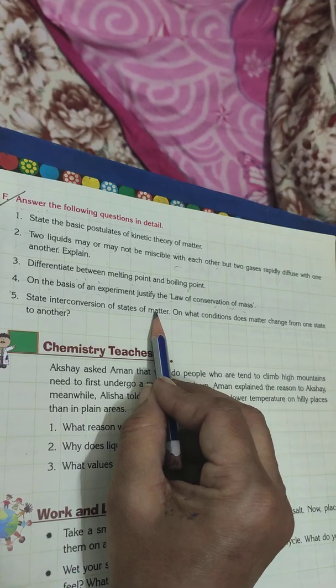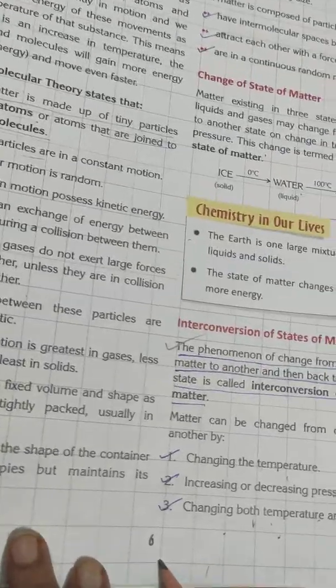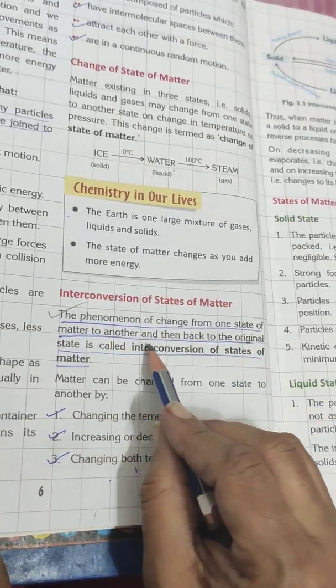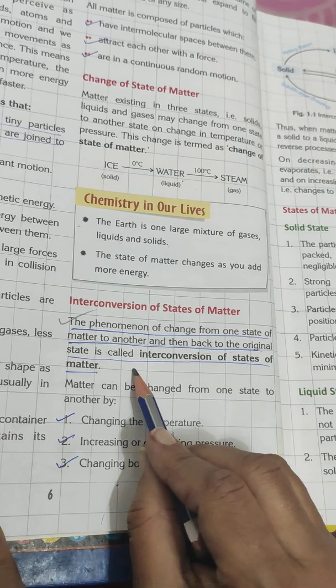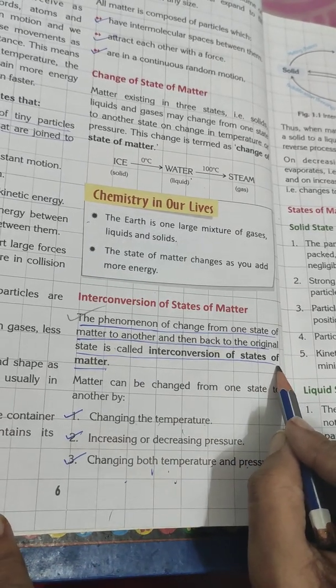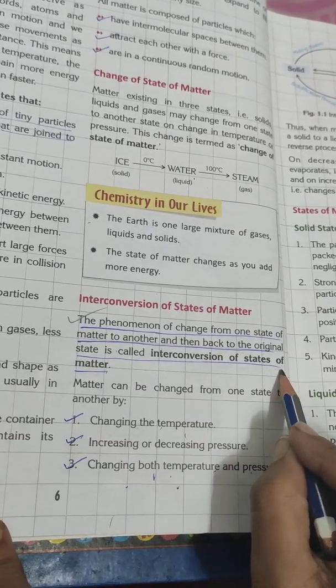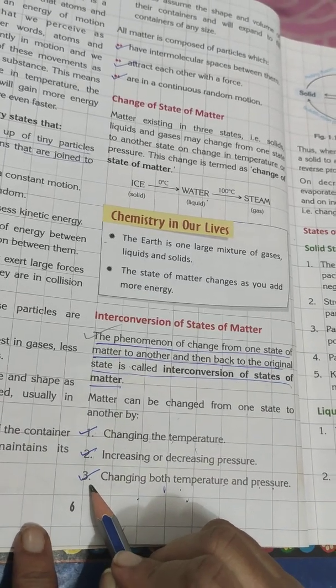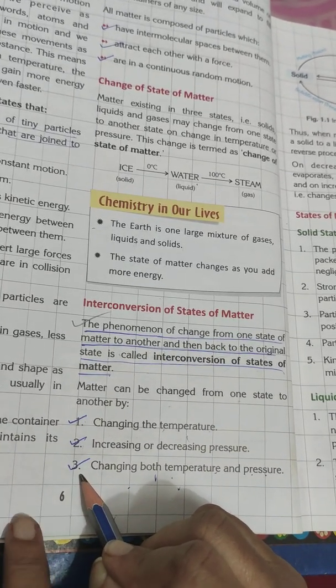State interconversion of states of matter and on what conditions does matter change from one state to another. Come to page 6 for the definition: the phenomenon of change from one state of matter to another and then back to the original state is called interconversion of states of matter. Write the 3 points on the basis of which they change. This completes the full chapter.